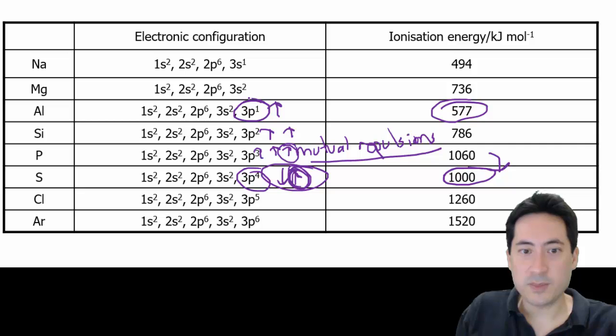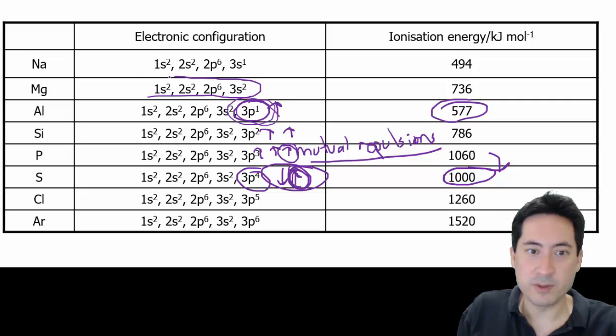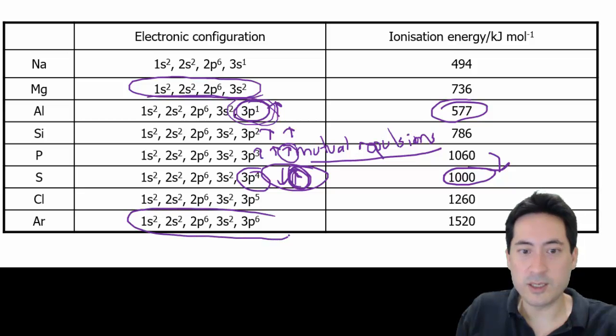This one here, this one's much easier because it's not a full shell, so it's not inherently stable. Whereas once you've removed that electron from that 3p, you get to full sublevels. It's not as good, as stable, as having a full noble gas where all the energy levels are full. The old way that we understood the electron shells in IGCSE.